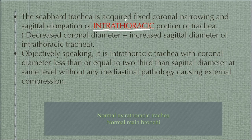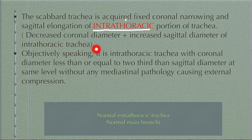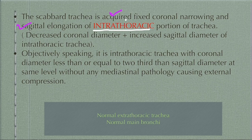Now coming to the definition — I will give you two definitions of saber-sheath trachea: one subjective and one objective. The subjective definition: the scabbard trachea is an acquired, fixed coronal narrowing and sagittal elongation of the intrathoracic portion of the trachea, meaning there is decreased coronal diameter and increased sagittal diameter of the intrathoracic trachea. Remember three key words: first, this is an acquired condition; second, there is sagittal elongation and coronal narrowing; third, it involves the intrathoracic portion of the trachea.